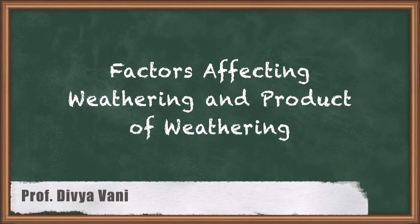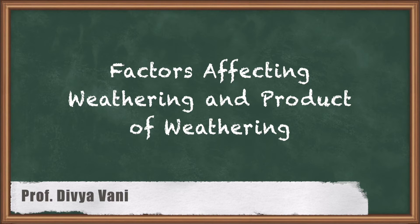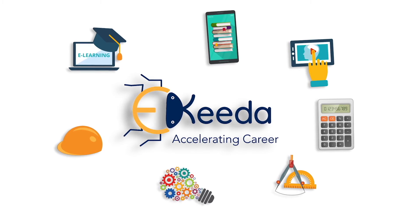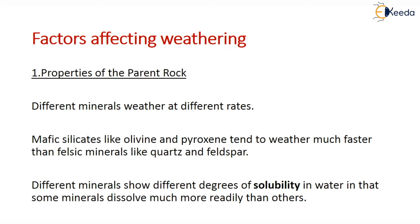Today we are going to learn the next topic in Chapter 1, Introduction and Physical Geology. This topic deals with the factors which are affecting weathering and the products of weathering. In the earlier slides we have already seen what is weathering, what are the agents which activate weathering, and how many types of weathering there are. Now, in these slides we will study about all the factors which affect weathering.